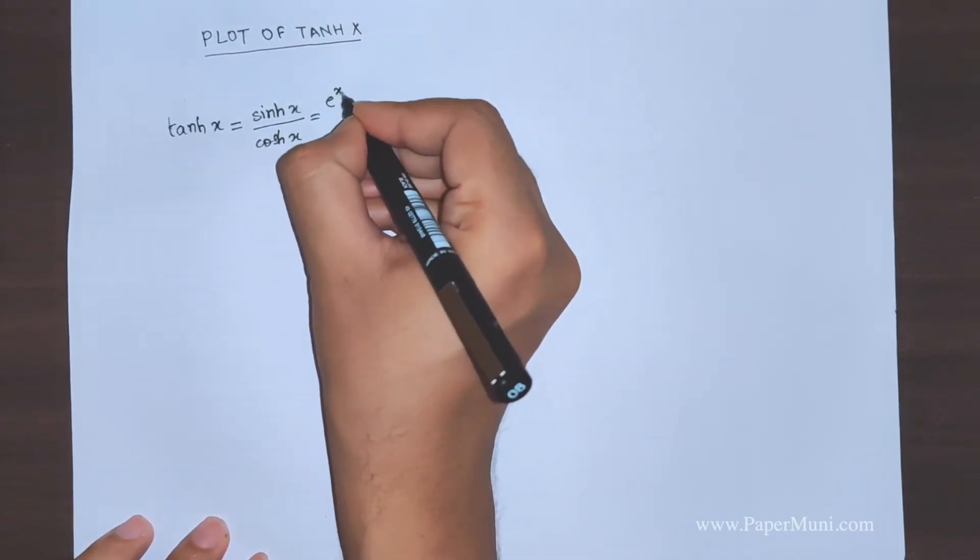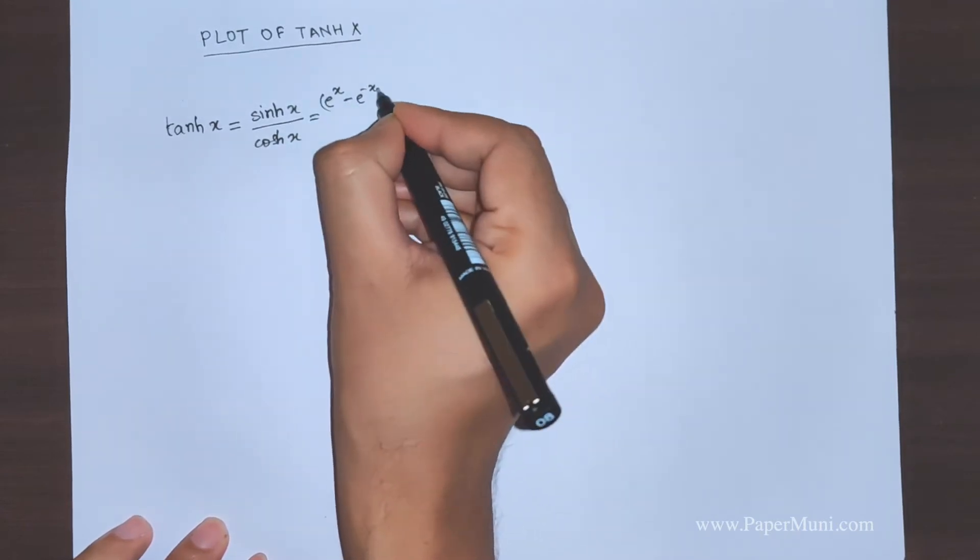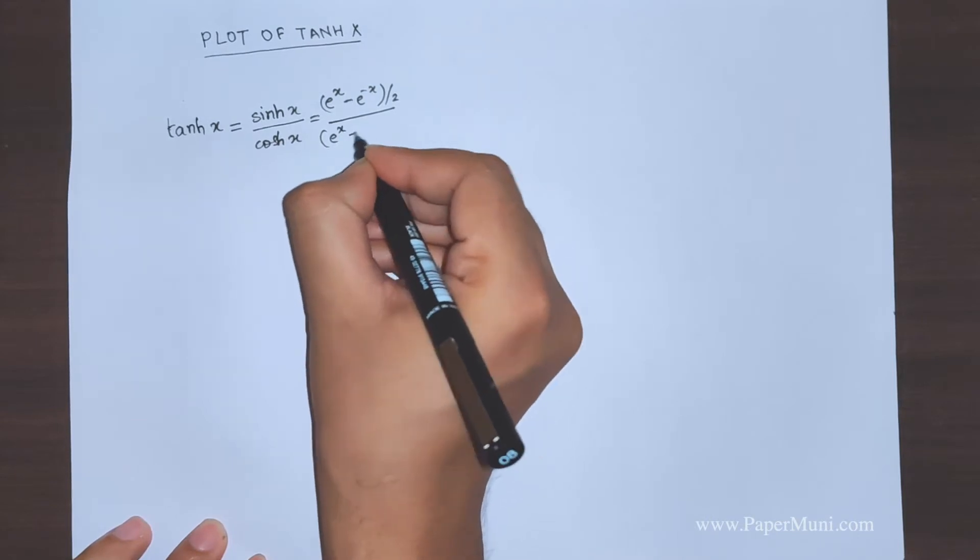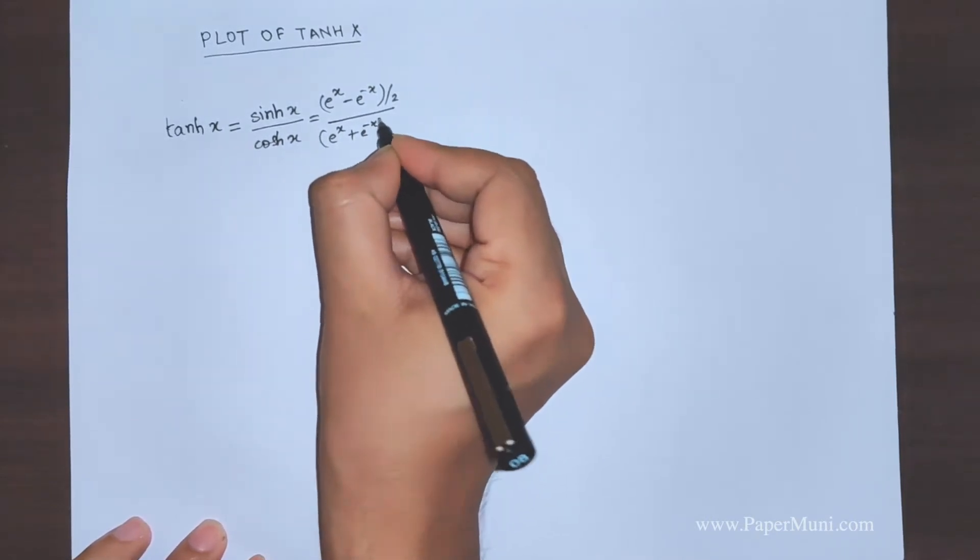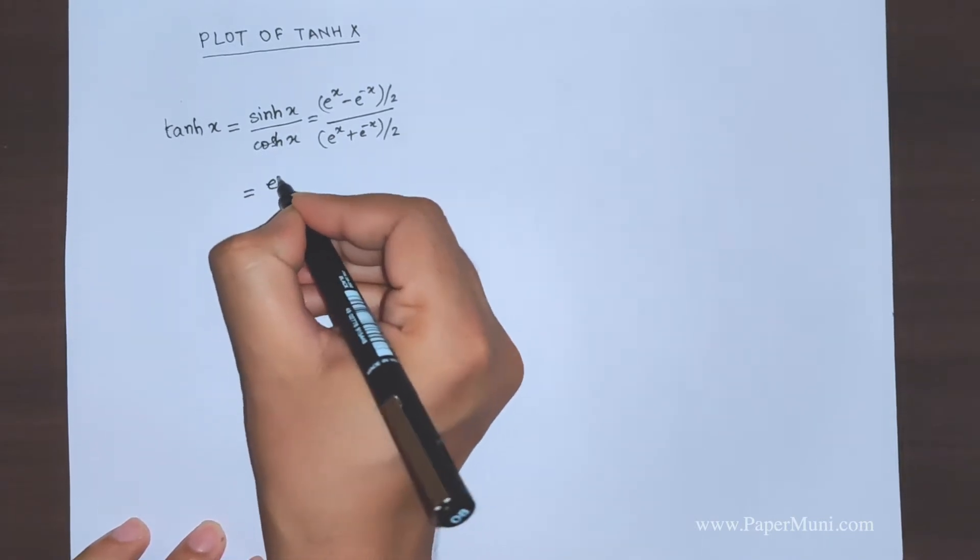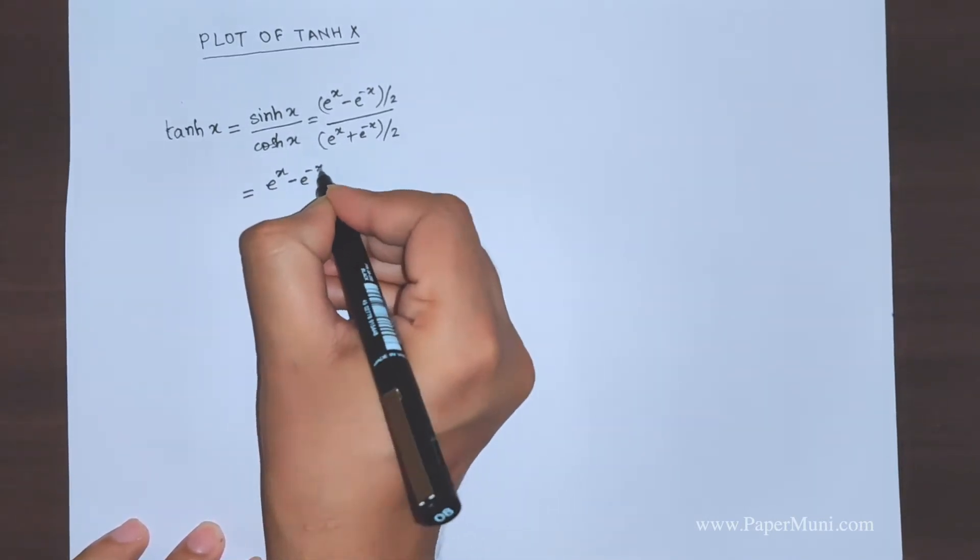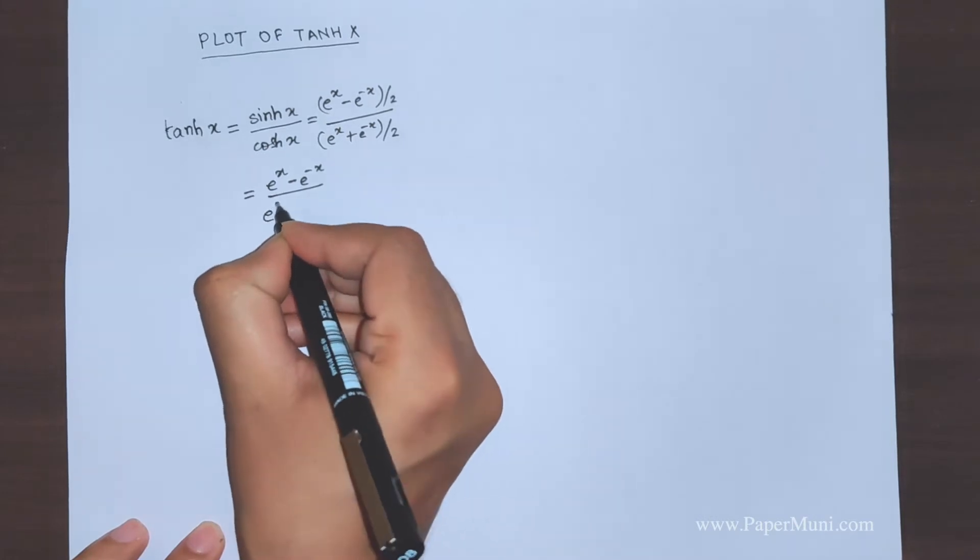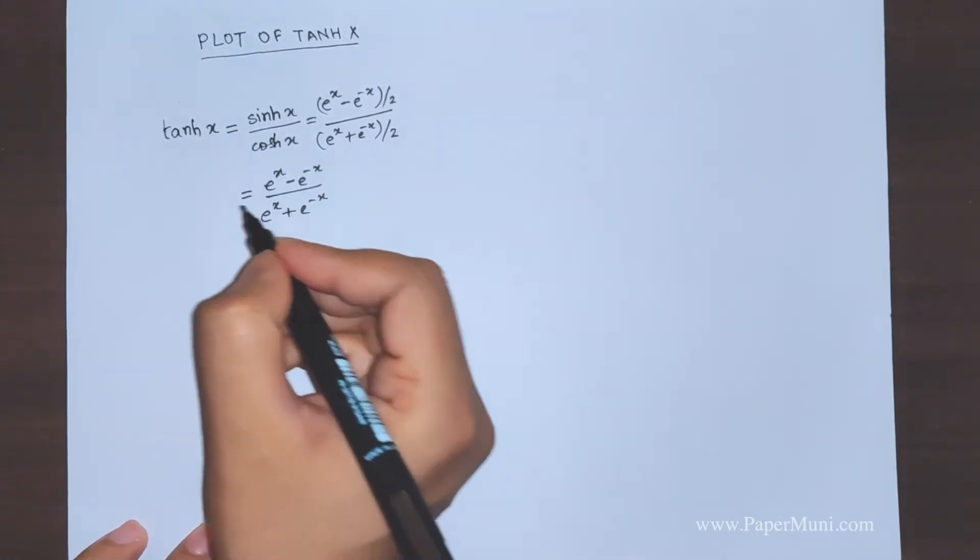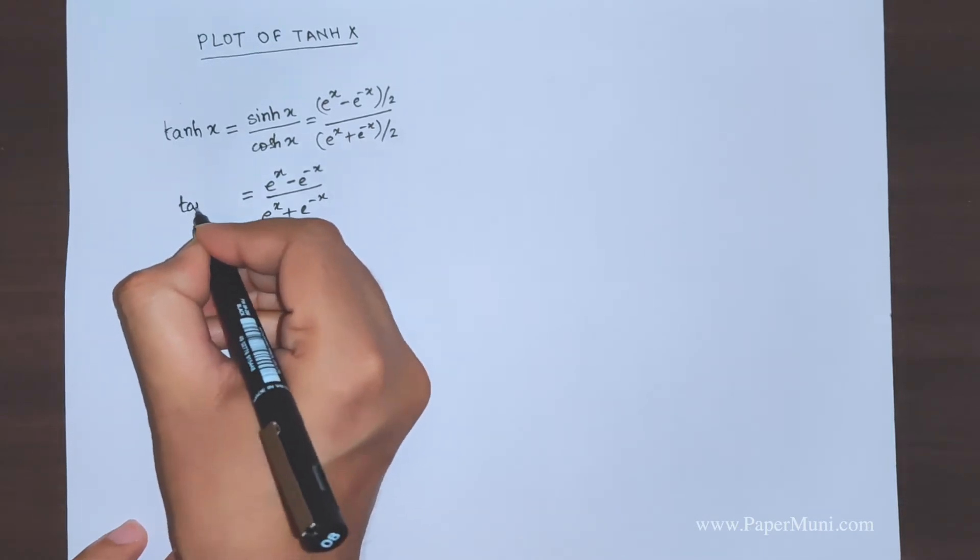This is (e^x - e^(-x))/2 and this is (e^x + e^(-x))/2. So finally we have the form as (e^x - e^(-x))/(e^x + e^(-x)). This is what we're looking to plot.